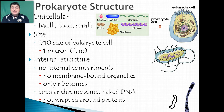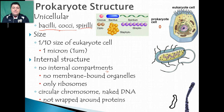Our basic prokaryotes or basic bacteria share some structural similarities. They're all going to be one cell, and they typically have specific shapes. They can be rod-shaped, which we call bacilli; they can be round, which we call cocci or coccus bacteria; or they can be spiral-shaped, called spirilli. When they come in pairs we call them diplo; when they're grouped together we call them staphylo; and when they're in chains they're called strepto.